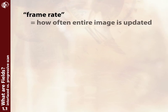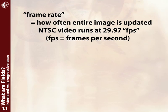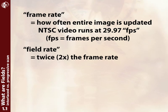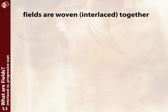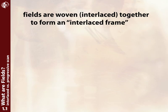You're probably familiar with the concept of frame rate. NTSC video runs at 29.97 frames a second. Fields are taken at twice the frame rate — this is sometimes called the field rate. In the case of NTSC video, the field rate is 59.94 fields per second. Those fields are then woven or interlaced together into what we call an interlaced frame.